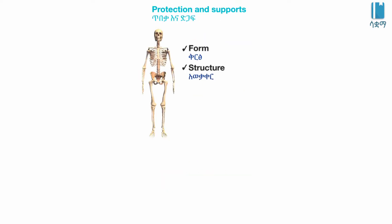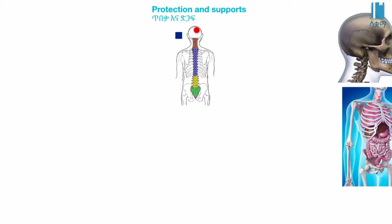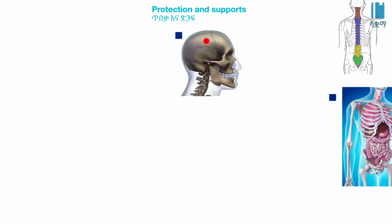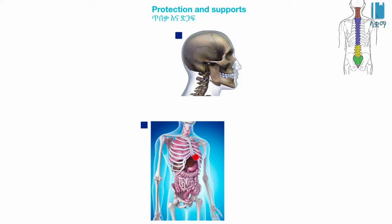This is what we call protection and support, which includes the spinal cord and vertebral bones. The skull protects the brain, and the ribcage protects the heart and lungs.